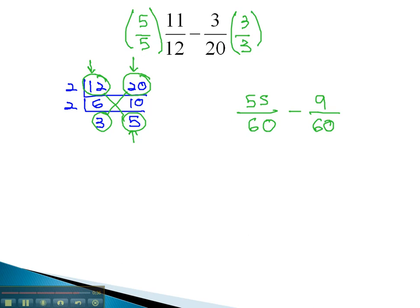And we would then be ready to subtract. 55 minus 9 is 46 over 60, and then we can reduce that fraction by dividing both by 2, which will give us 23 thirtieths for our final solution.